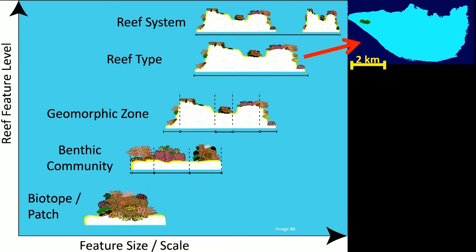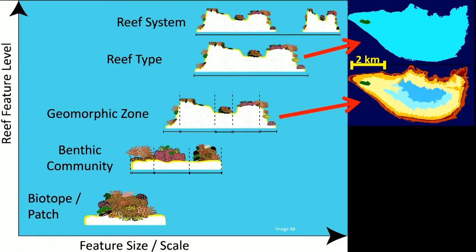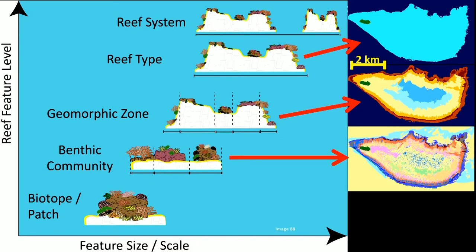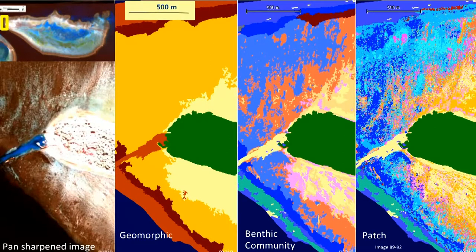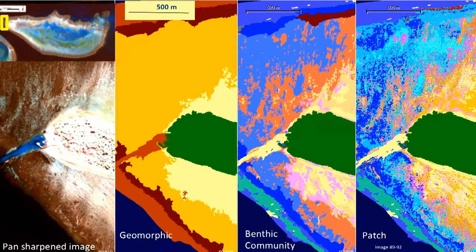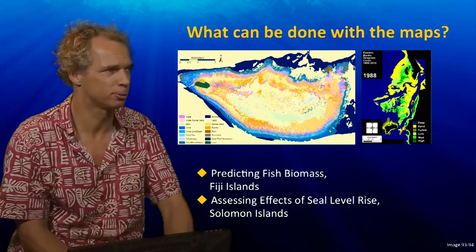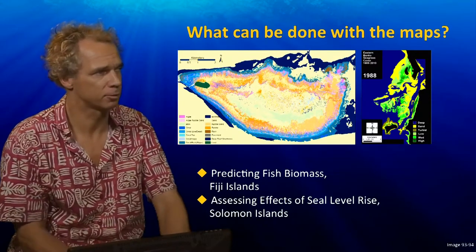All these levels of detail can be mapped to a certain extent. Here you see the geomorphic maps, the reef type map, the benthic community map, and the biotope map. On the left you see the satellite image, a pan-sharpened image with the deep channel, the dark blue channel with boats in the middle and the island of Heron. The next image is the geomorphic map, followed by the benthic map, and on the right is the patch scale map. Each of these maps provides valuable information at different spatial scales and detail, useful for management and research.